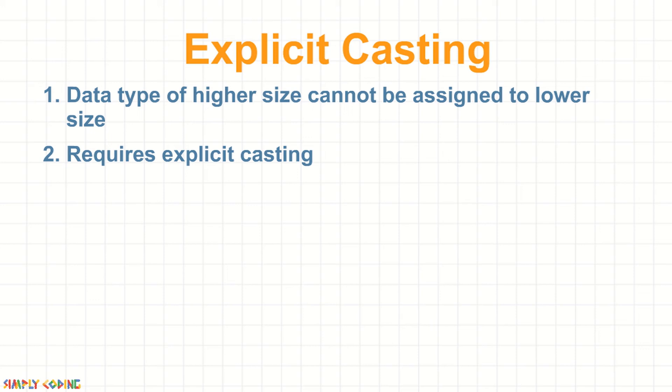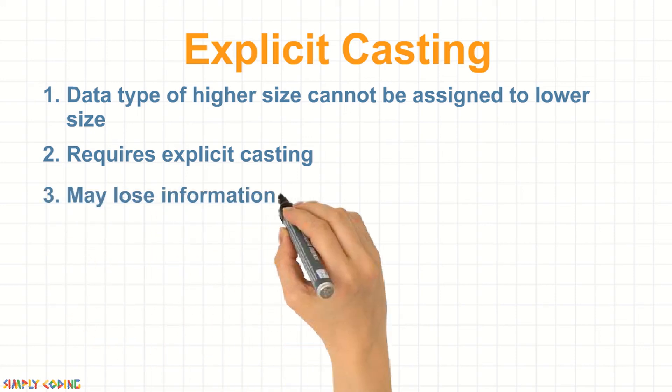A casting operation must be performed by the programmer to verify that the higher size is narrowed to lower size. A narrowing primitive conversion may lose information about the overall magnitude of a numeric value and may also lose precision and range.